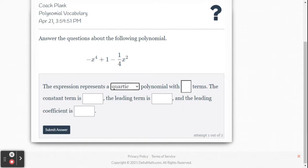How many terms does this polynomial have? It has three different terms. The constant term is the number. That's the one. The leading term is going to be the negative x to the fourth degree.